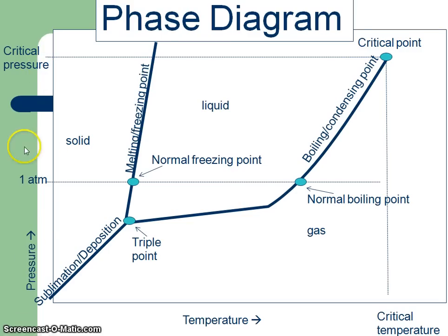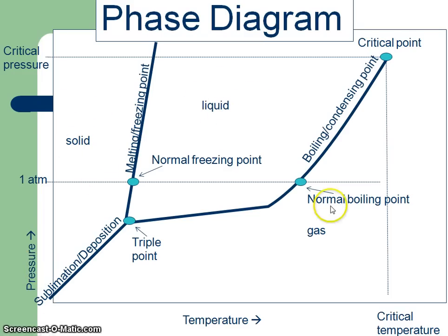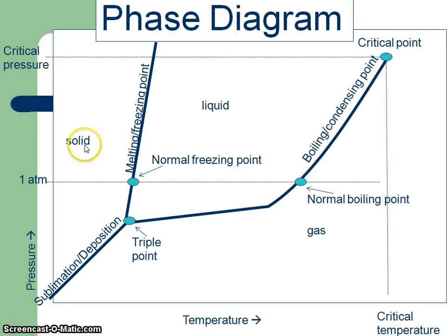We have pressure going up the y-axis, and on the x-axis we have temperature. We have solid in this area, liquid in this area, and gas in this area. Now between solid and liquid, most of you know that's melting and freezing — just like on our heat curve. We went from solid, melted and froze, went to a liquid, and then did boiling and condensing, and we went to a gas. So this is a different way to look at it.